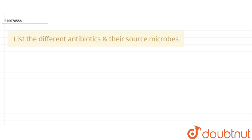The question says: list the different antibiotics and their source microbes. There are several antibiotics, so on one side we will see the antibiotics and on the other side we will see their sources. We need to list some of them.